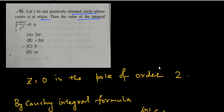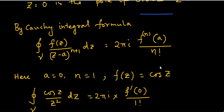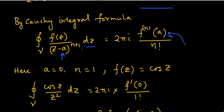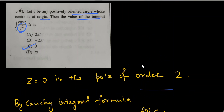The final question: let γ be a positively oriented circle centered at the origin; find the value of ∮_γ cos(z)/z² dz. Note that z = 0 is a pole of order 2. By Cauchy's integral formula for a pole of order n: ∮_γ f(z)/(z-a)^n dz = 2πi · f^(n-1)(a) / (n-1)!. Here f(z) = cos(z), n = 2, a = 0, so the integral equals 2πi · f'(0) / 1! = 2πi · (-sin 0) = 2πi · 0 = 0. The correct answer is 0.